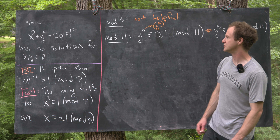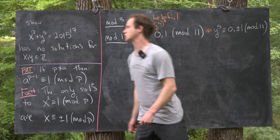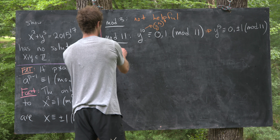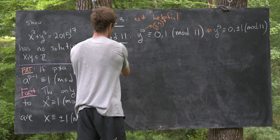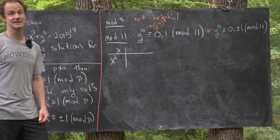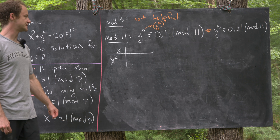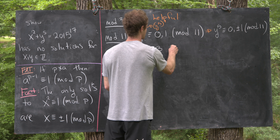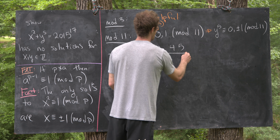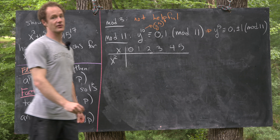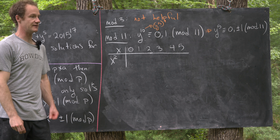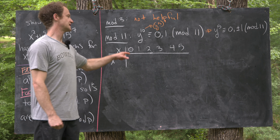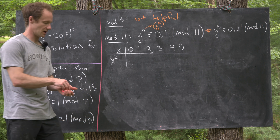Another thing we'd like to do is look at all of the perfect squares mod 11, since we're dealing with this x squared term. So this is a table of values of x and values of x squared, reduced mod 11. We need to look at x from 0 to 5. We don't have to look any further because 6 is minus 5, and minus 5 squared equals 5 squared, so this gives us all the perfect squares mod 11.